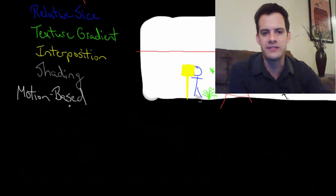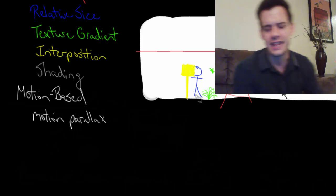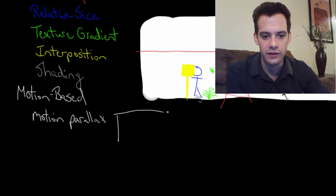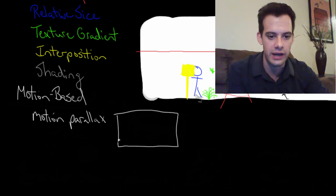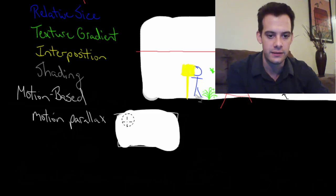There's two main ways that we use motion to tell about depth. The first of these is something called motion parallax. The idea of motion parallax is that things appear to move at different speeds based on how far away from us they are. A great way to demonstrate this is just to imagine that you're looking out a train window here.